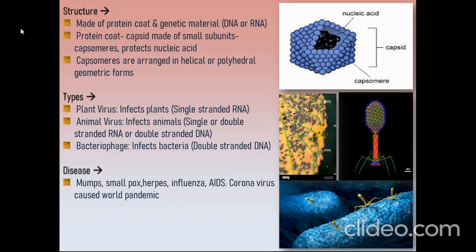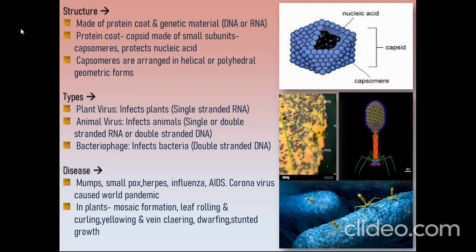The diseases viruses cause in humans include mumps, smallpox, herpes, influenza, AIDS, and recently coronavirus, which caused a world pandemic. In plants, they cause mosaic formation, leaf rolling and curling, yellowing and vein clearing, dwarfing, and stunted growth.